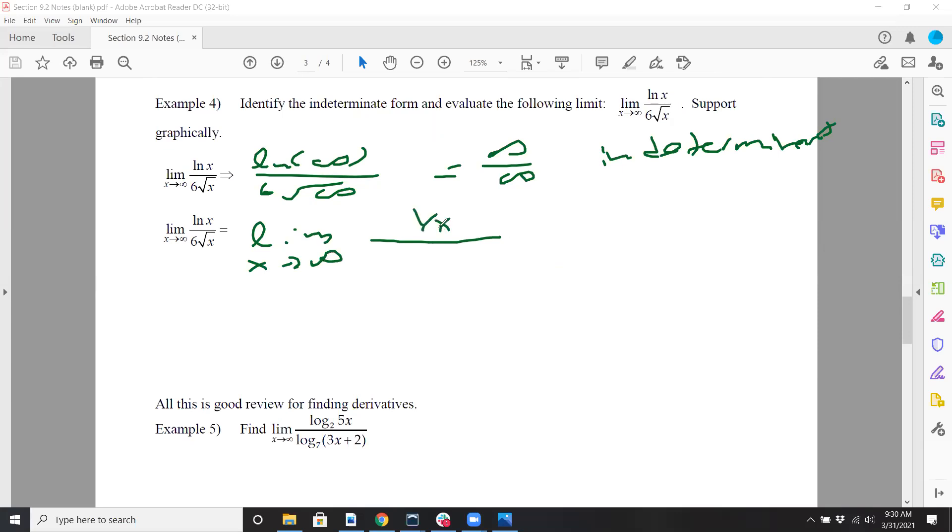So let's look at this one here. Here we have x approaching infinity. Obviously, if I take natural log of infinity over 6 times root infinity, that's infinity over infinity. So this is indeterminate. So I'm just going to do L'Hôpital's rule. I'm going to take the limit as x approaches infinity of the derivative of the top, which is 1 over x. And the bottom, which would be 6 times 1/2 times x to negative 1/2.